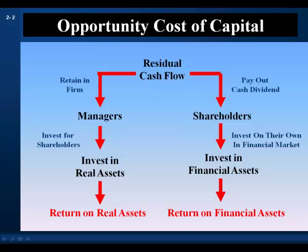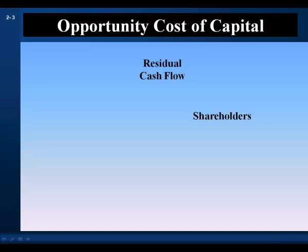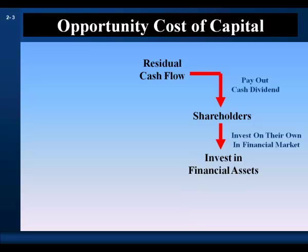We'll use this graphic to explain the concept. The firm generates residual cash flow — the equity cash flow that belongs to the firm's shareholders. The firm can pay it out to shareholders as a cash dividend or retain it in the firm. Suppose it's paid out as a cash dividend. Shareholders have investment horizons extending over a number of years, so when they receive cash, they'll reinvest it to earn a return. Shareholders have access to the financial markets and the rates of return offered there, so they'll reinvest the cash in financial assets.